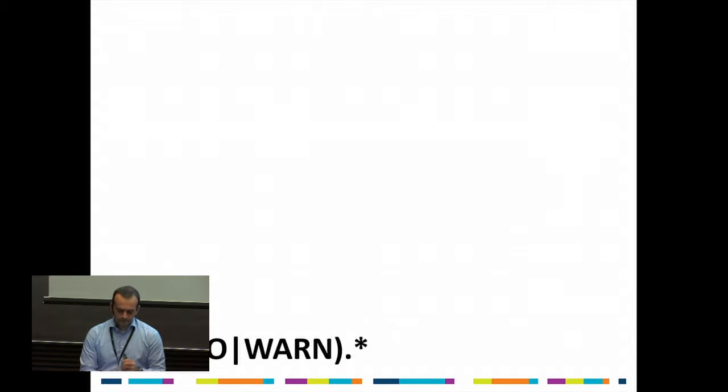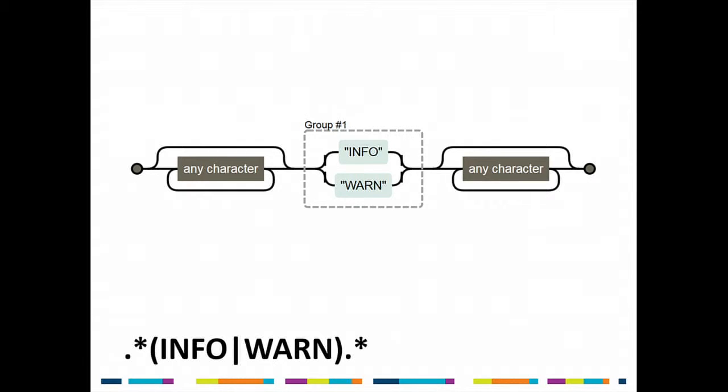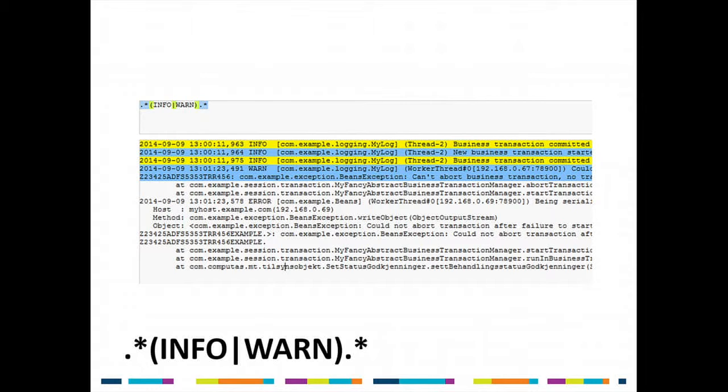Let's start with a simple one. What we have here are a couple of things: dot-star says there will be any character zero or more times — dot is anything, and star means zero or many times. Then we have a group saying there will be either the text INFO or WARN — those exact letters following each other — and then anything else again. This is a really simple regular expression.